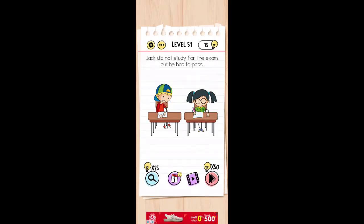Jack did not study for the exam but he has to pass. As you can see, she is happy, so she is writing the answers. He needs to cheat from her.